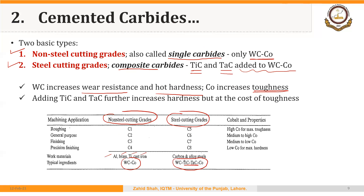Steel cutting grades are generally used to machine carbon and alloy steel, as they have higher hardness and are used for relatively harder workpieces. Moving from C1 to C4, or from C5 to C8, we move from roughing applications to finishing and precision finishing applications. High cobalt content provides maximum toughness, while low cobalt content provides maximum hardness.